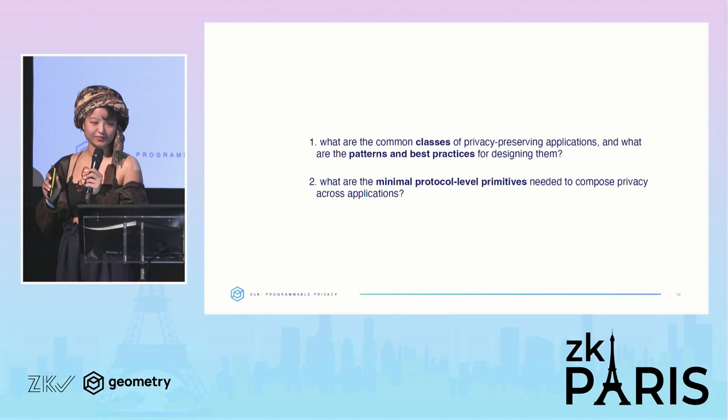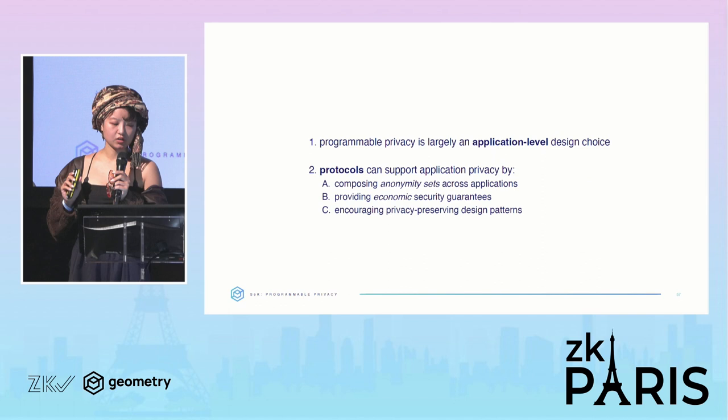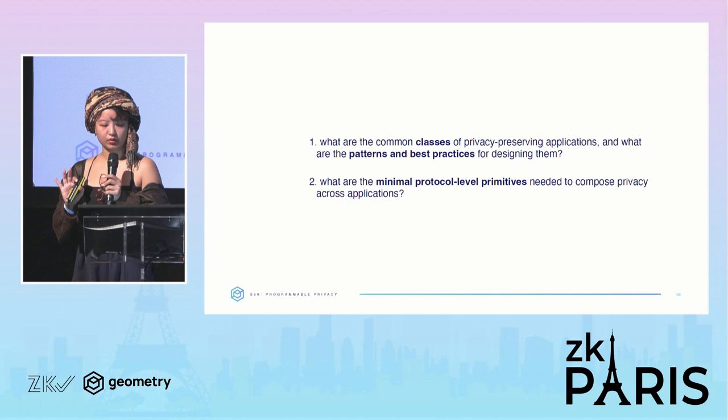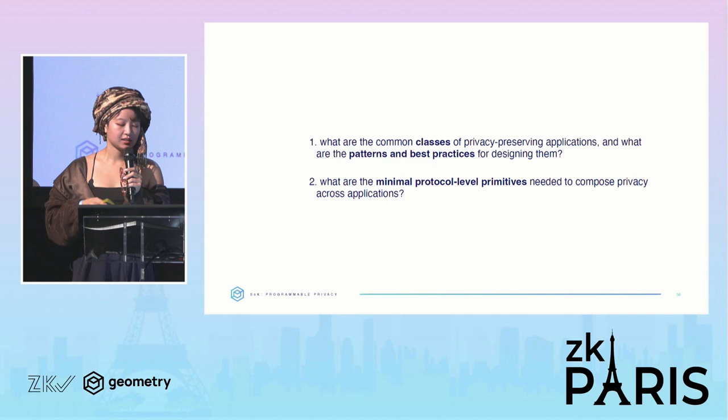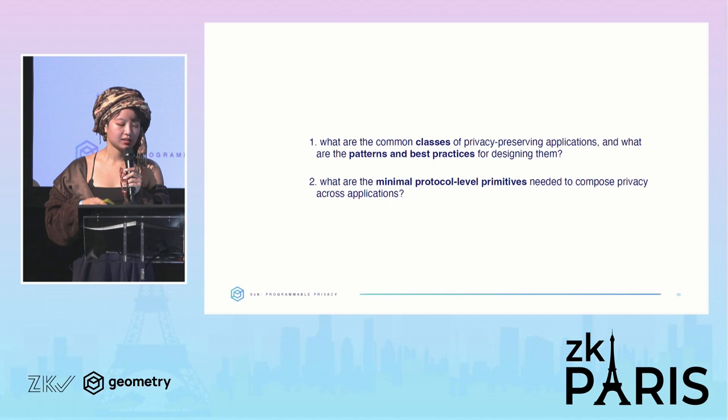Since programmable privacy is so largely dependent on application design choices, I want to leave you with some open questions: What are some best practices and good patterns for privacy-preserving applications? How does privacy actually affect the mechanisms of your applications? And secondly, what can protocols do at a minimum to support these privacy-preserving applications? Thank you, that's all I have.